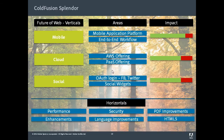This is a quick snapshot of what's coming up in Splendor. We'll be focusing on the verticals of mobile, cloud, and social — including end-to-end workflow, AWS and platform-as-a-service offerings, and OAuth login. We'll also have horizontal improvements in performance and security. PDF integration is going to improve quite a bit with Splendor because we are revamping the underlying engine, resulting in much better quality PDFs generated from HTML5. PDF manipulation will also have much better capabilities. We'll continue to make enhancements to existing features, and language and HTML5 continue to be focus areas.